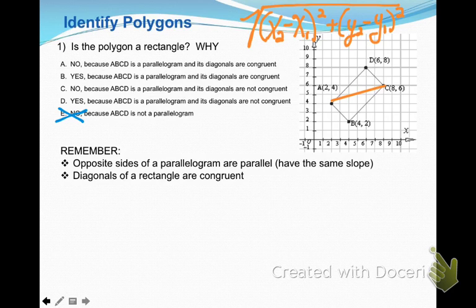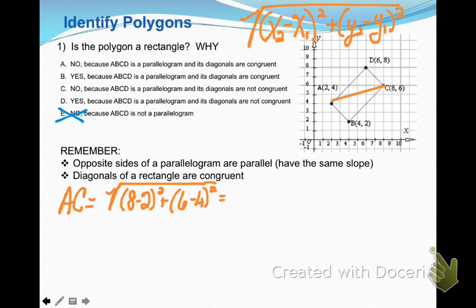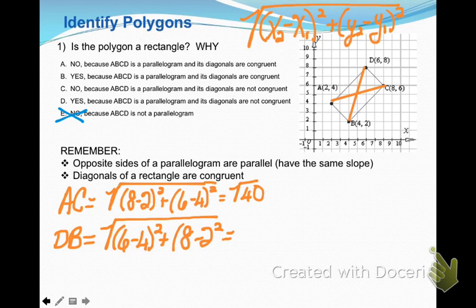Now let's erase everything and look at the diagonals of this shape. Let's look at diagonal AC — we need the length because we're going to find out if it's congruent to diagonal DB. Using the distance formula, the length of line segment AC is the square root of 40. Using the distance formula for diagonal DB, that diagonal also has a length of the square root of 40. Since those are both the exact same length, I can say that this is indeed a rectangle because they have congruent diagonals. That would be answer B.